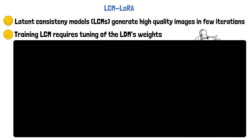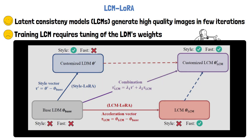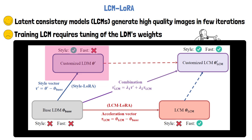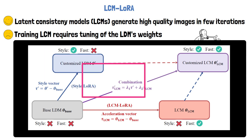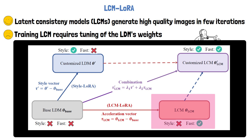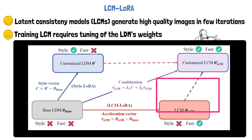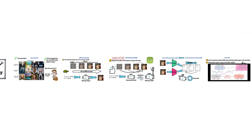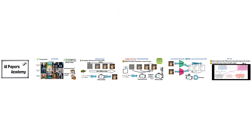We can see a description for that in the following figure from the paper, where on the bottom left we have a pre-trained latent diffusion model, and on the upper left we have a customized version of that model for a specific style, fine-tuned using LoRA. On the bottom right we have the LCM LoRA version of that model. We can combine the LoRA weights from the style LoRA and the LoRA weights from the LCM LoRA, and get a customized LCM version of the model without additional training. Thank you for watching and stay tuned for more reviews of AI papers.